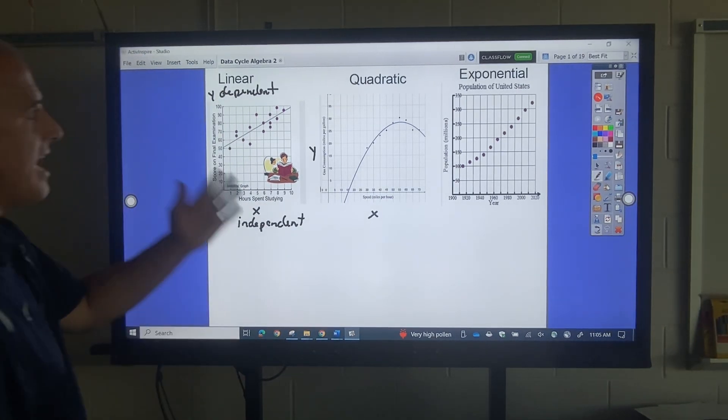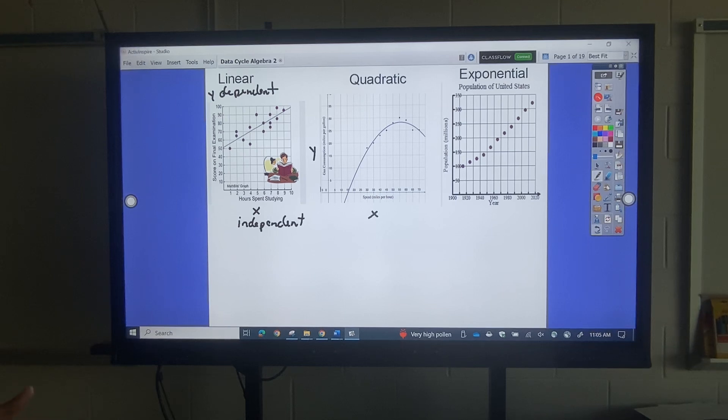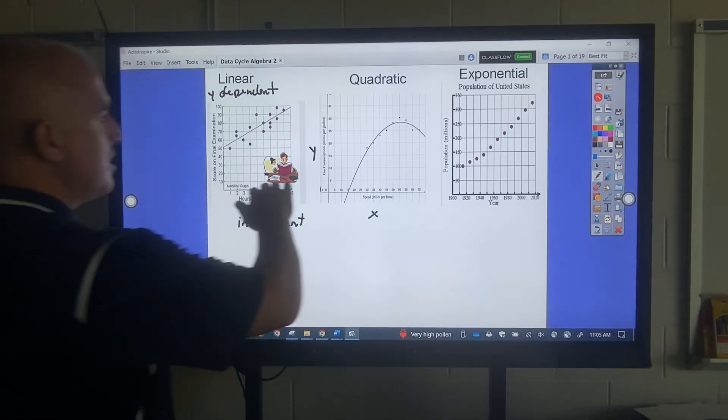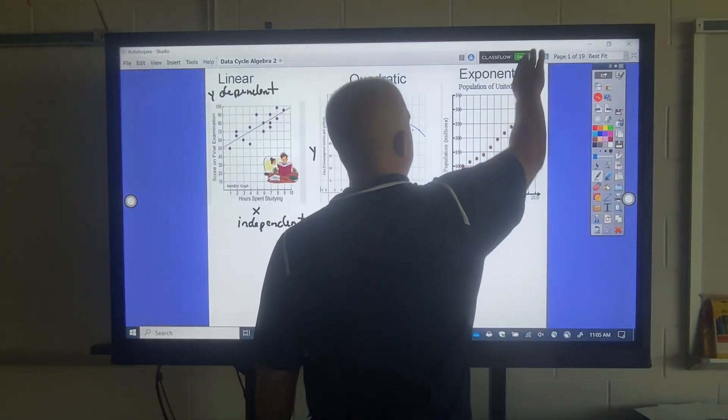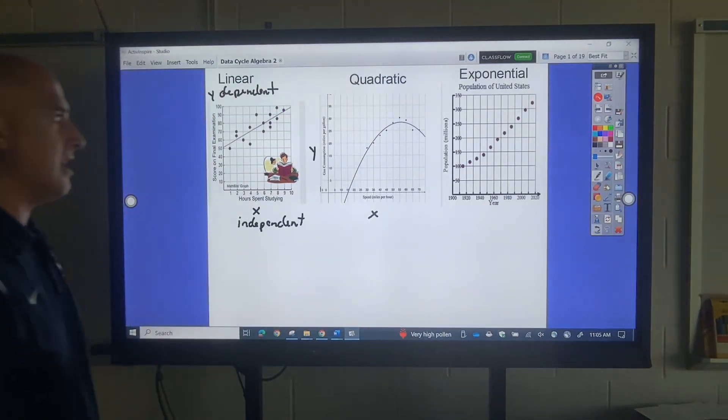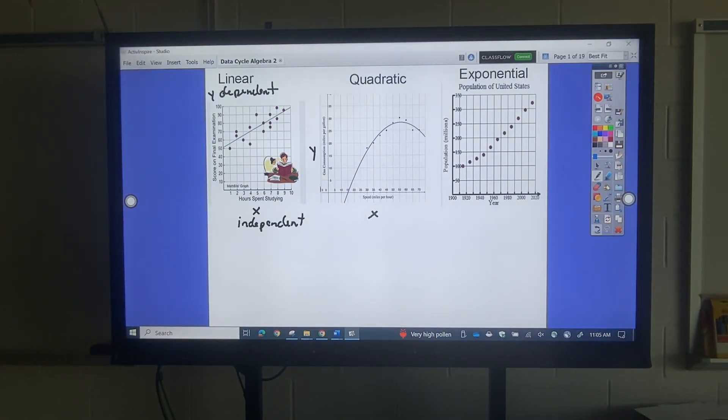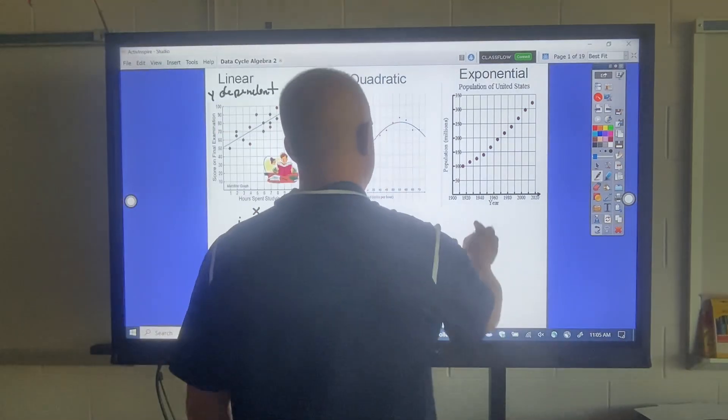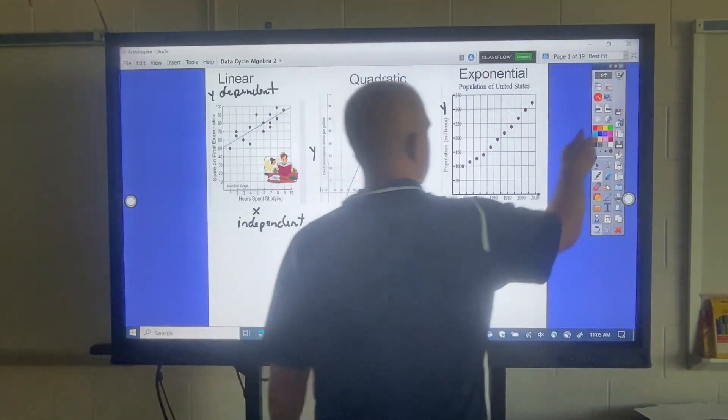This is what I call an exponential graph. I'd like you to write down what you see there. As the years go by, the population grows. That's what that means. Once again, x and y, years and population.